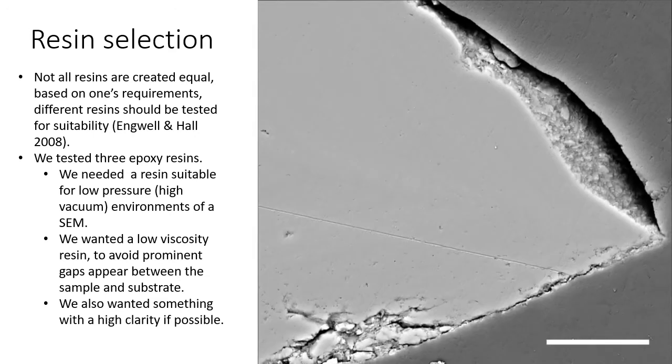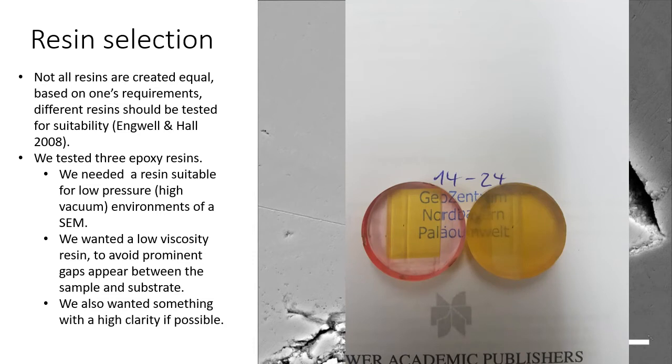We wanted something with low viscosity because with low viscosity we could avoid these gaps between our fossil sample which can lead to contamination later on. And also we wanted something with high clarity because then with such a small fossil we could easily see it through the resin itself for orientation.